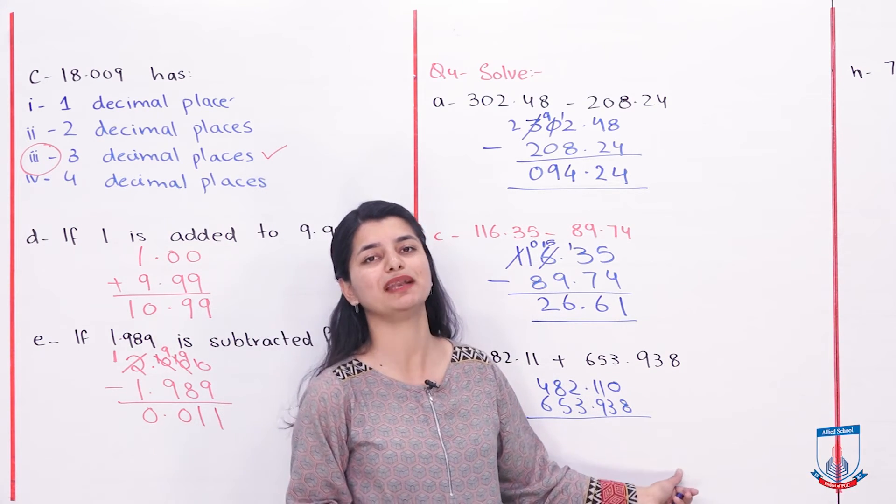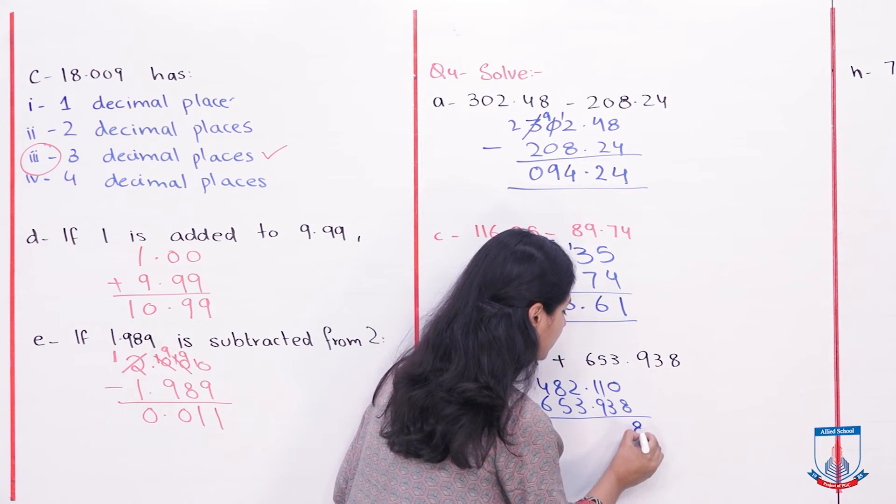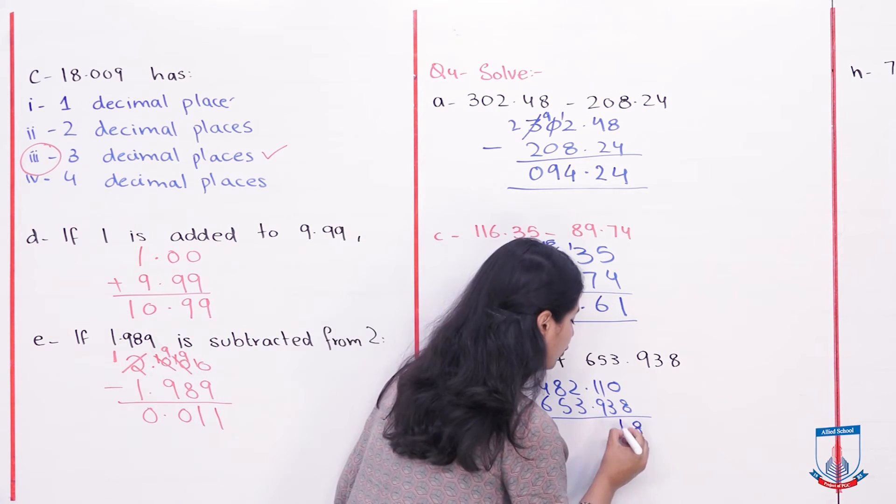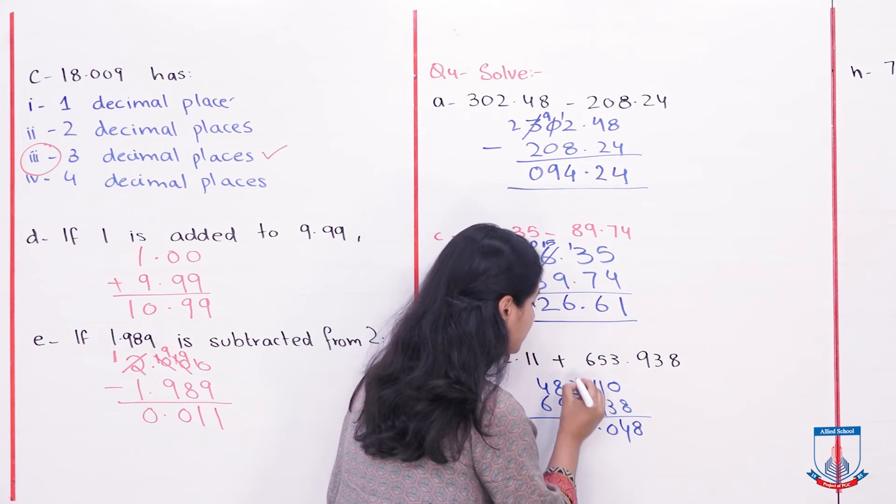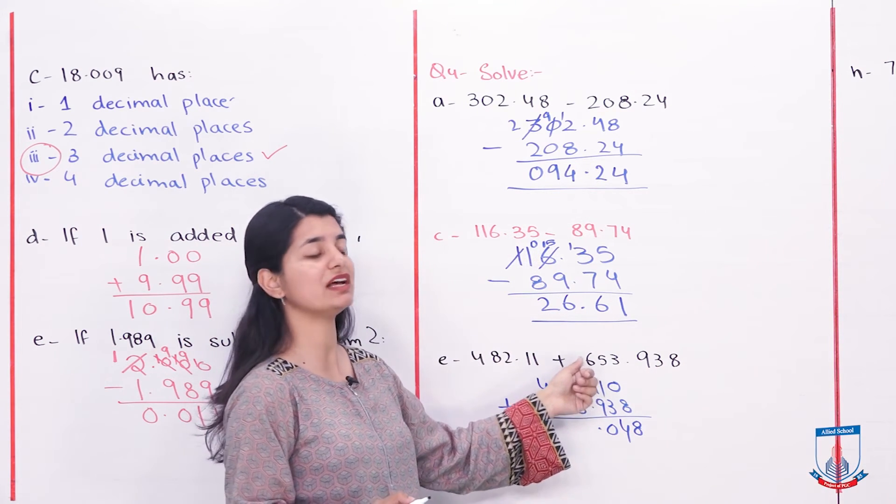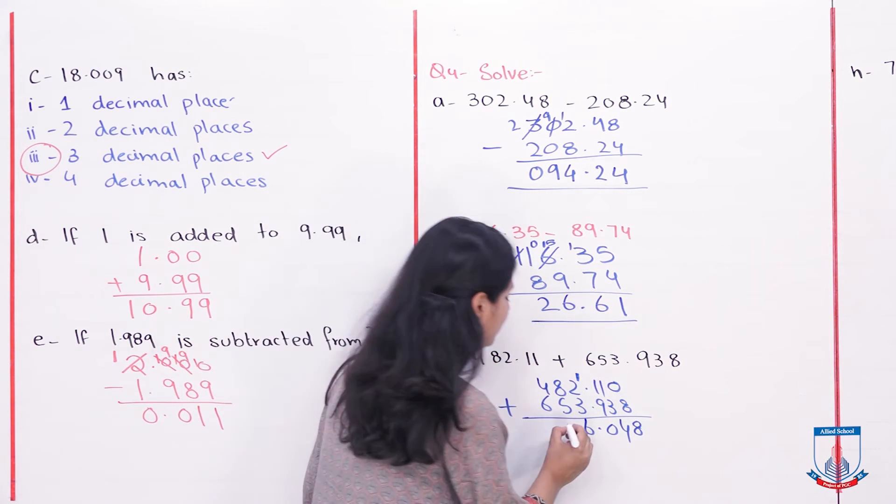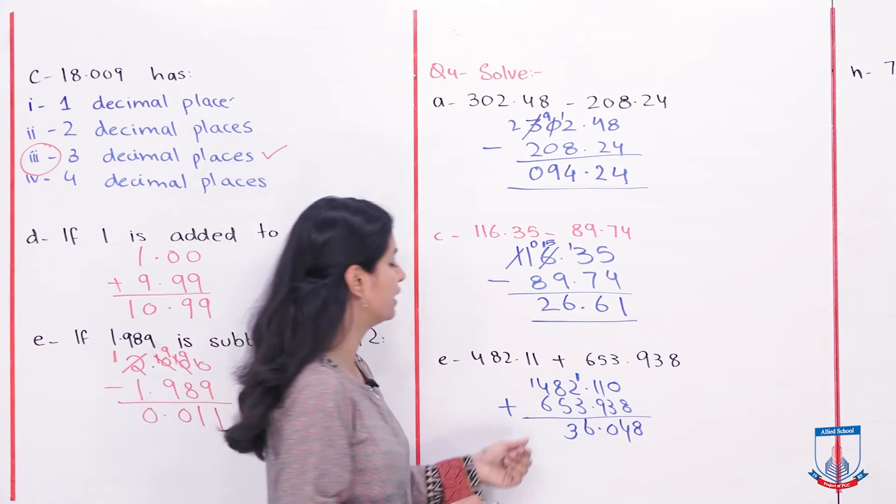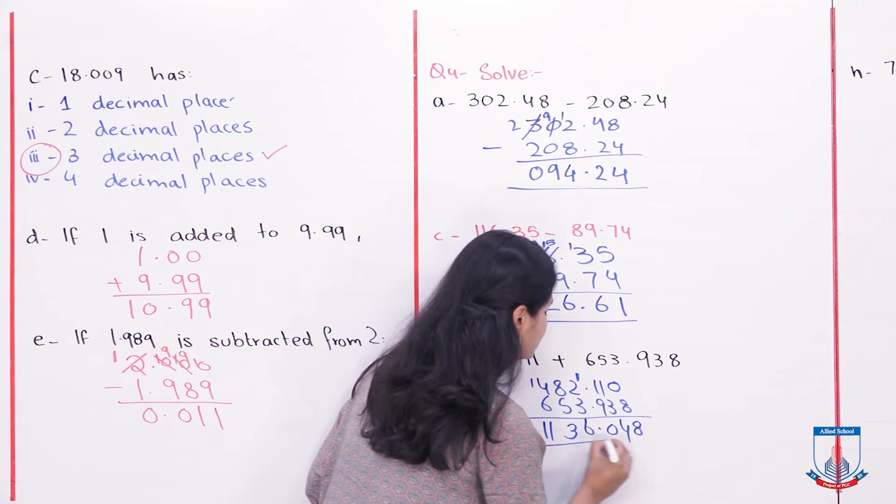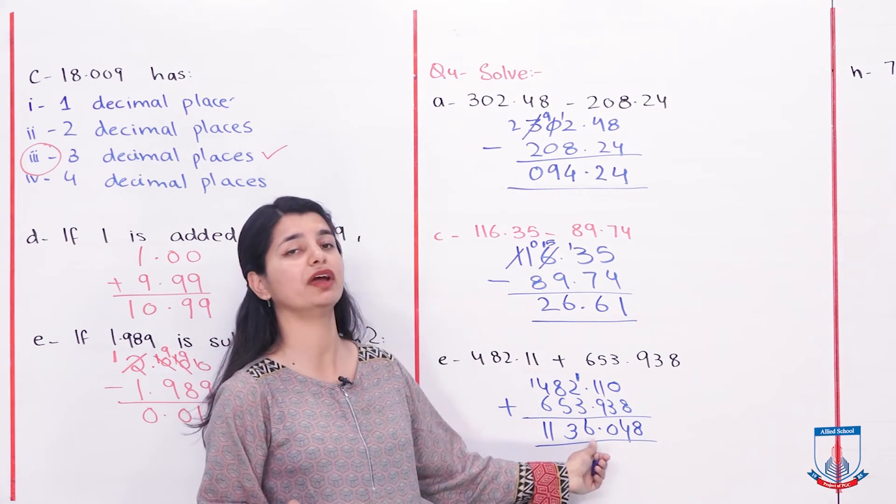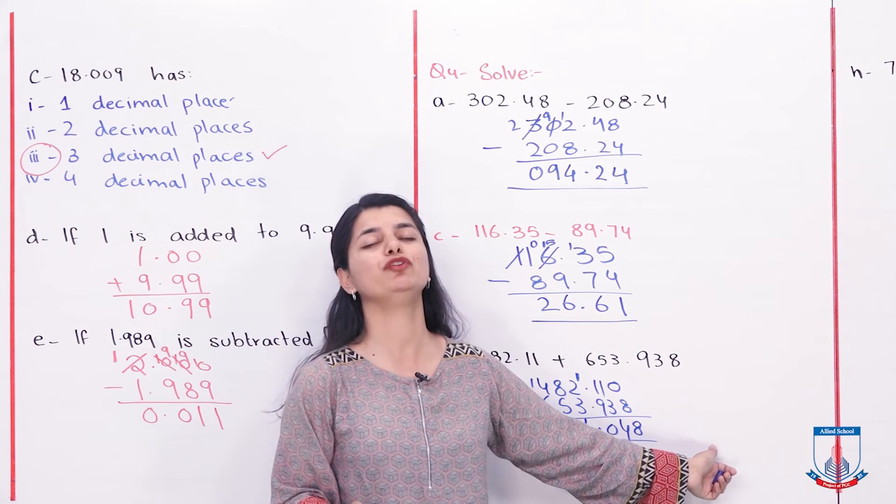So this will happen. We made like decimals. Now how do we add them? 0 plus 8, 8. 3 plus 1, 4. 9 plus 1, 10. Here decimal, 1 carry. 3 plus 2, 5 plus 1, 6. 8 plus 5 is 13, 1 carry. 6 plus 4, 10 and plus 1, 11. So your answer is 1136.048. You will solve this in your notebooks.